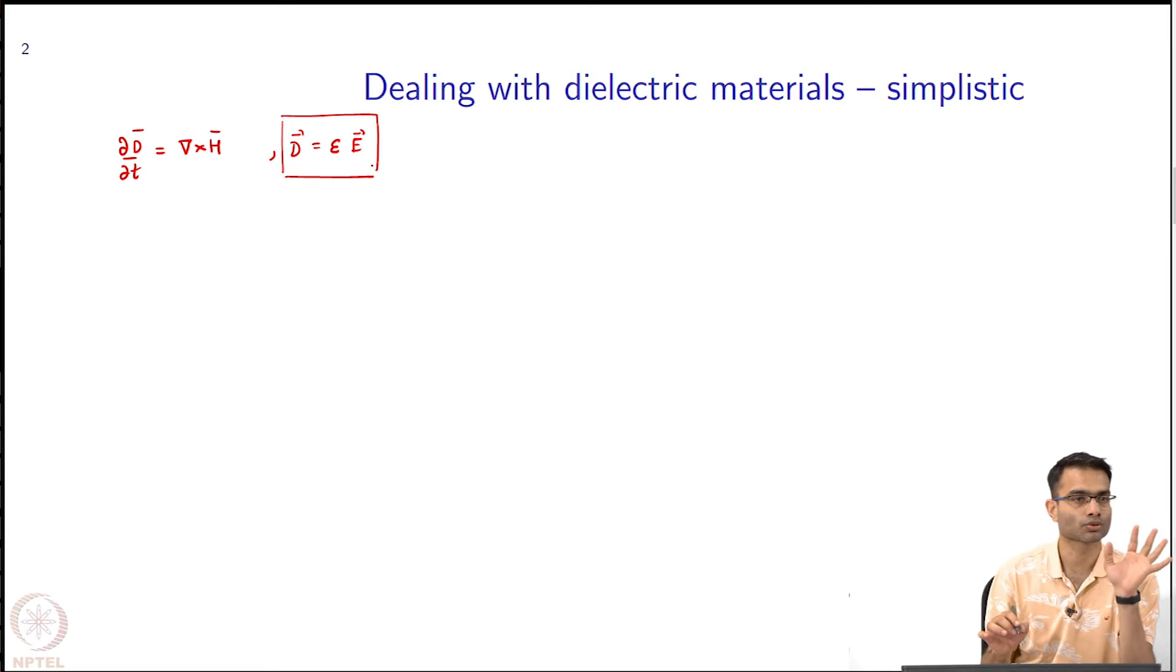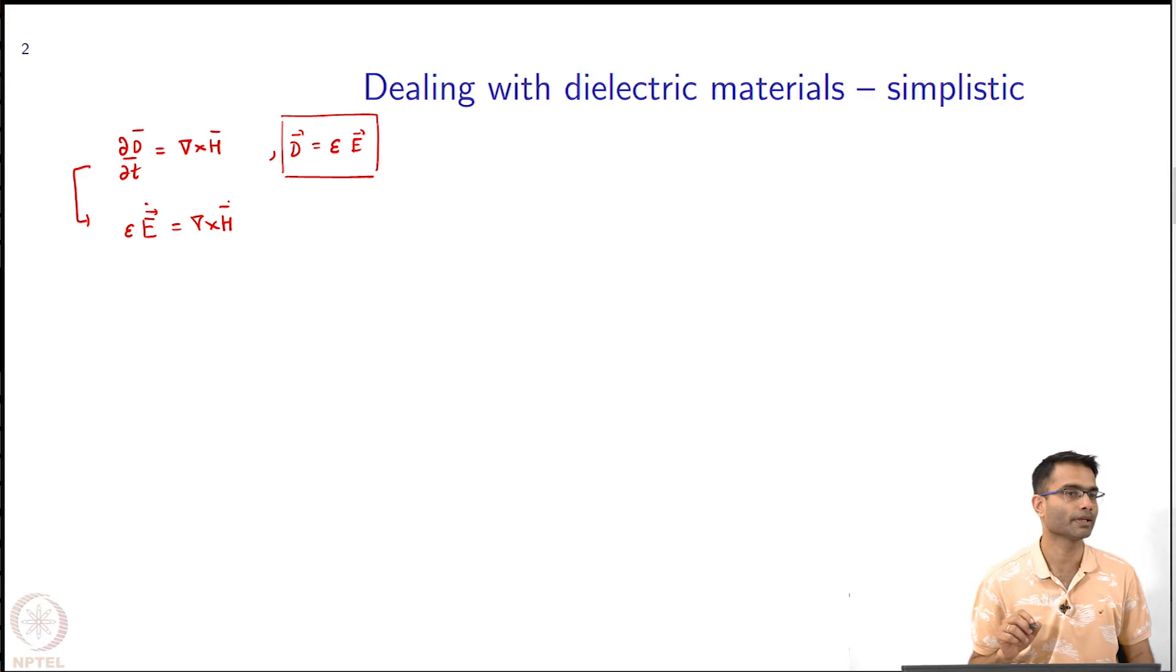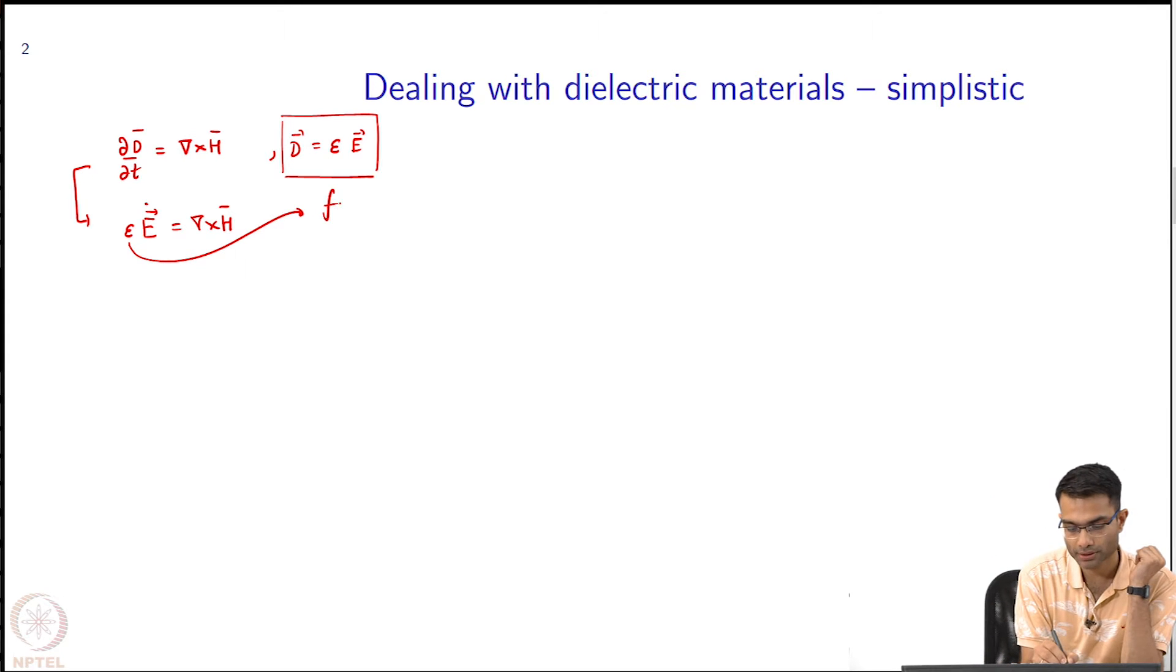For now, let us just assume that this equation is correct. Then what would happen is that you would simply have this equation would become epsilon E dot is equal to curl of H, and that is how we deal with it. In any E cell I assign the permittivity to be epsilon 1, epsilon 2, whatever. This is then fixed appropriately.